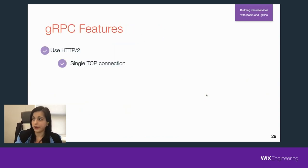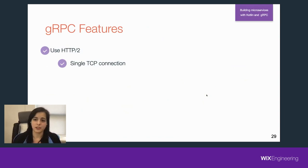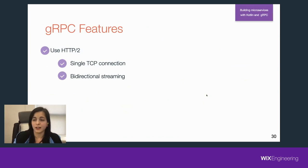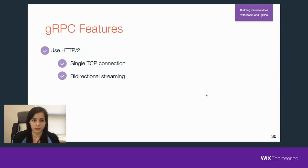Why is HTTP/2 so cool? First of all, we have a single TCP connection. With HTTP 1, you created a new connection for each request — there was keep-alive, but it had a small limit, so you still had to create new connections, which takes time and resources. With one connection open all the time, we can use bi-directional streaming — now the client and server can stream many messages to each other using the same connection. It's like a WebSocket, but without WebSocket — we don't need WebSocket because we can do it just using HTTP/2.